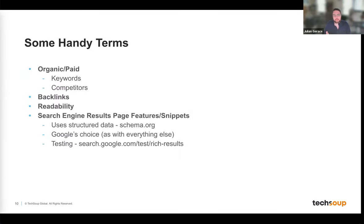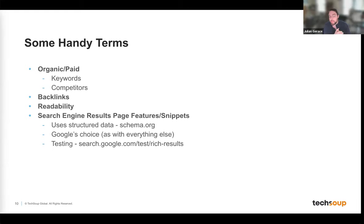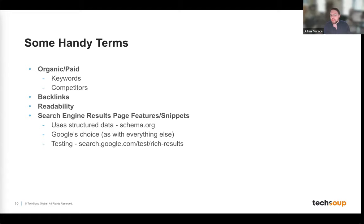Here are some handy terms. Organic means you're not paying — it's how you show up in normal searches. There are also paid options. Keywords are the terms or phrases you're trying to rank for. You can rank organically, where Google indexes and crawls your site and spits out your ranking, or through paid options like Google Ads. Nonprofits get $10,000 a month in Google advertising — TechSoup verifies that.